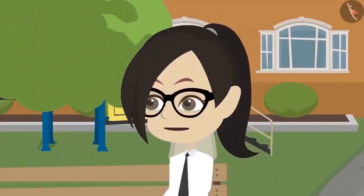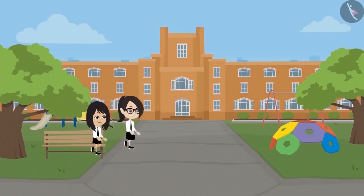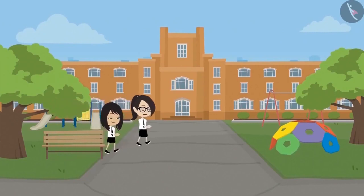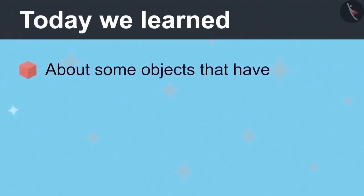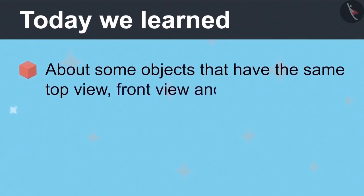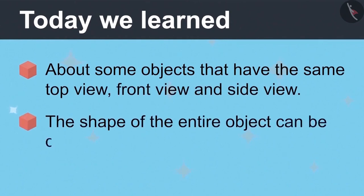You were able to draw the left view from the right view, top view and side view. Maybe that's why only three views of an object are enough. Neha and Vandana have now understood that there are some objects that look the same from all sides. That's why the top view, front view and the side view of those objects are the same. And the shape of the entire object can be determined from just three views.